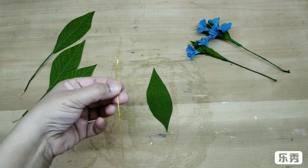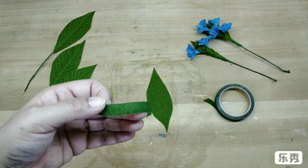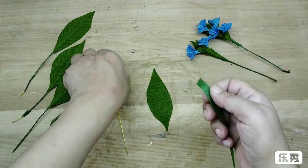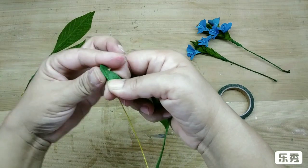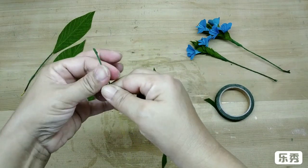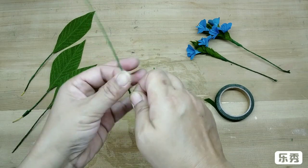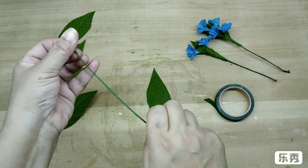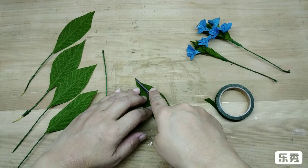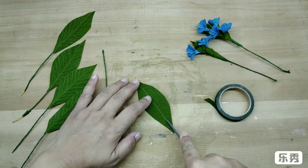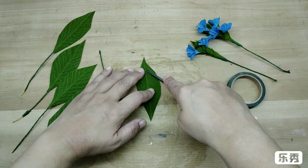For the leaf, again take a 5 to 6 inches long wire and cover it with green tape. Take the leaf. Just score a line first in the center and then on the sides. These have to be fairly close to each other.